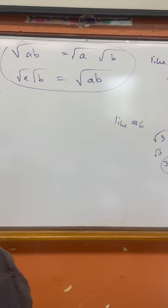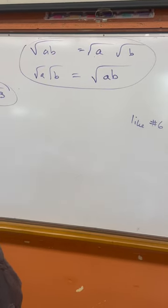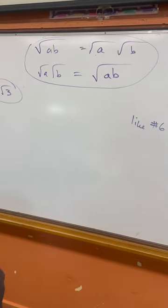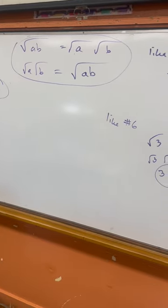When we looked at these rules, reminder, root AB is equal to root A and root B. And then if you were to separate them and reverse that, you'd get root A times root B equals root AB.